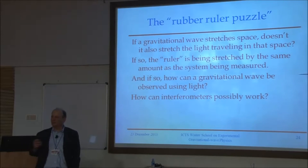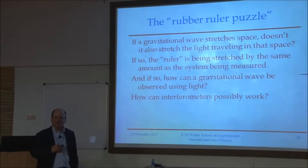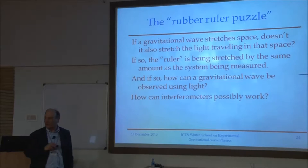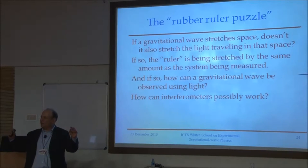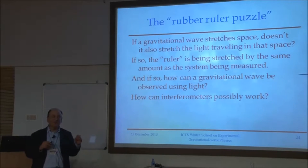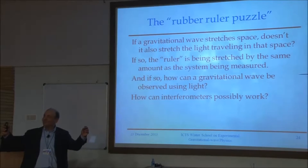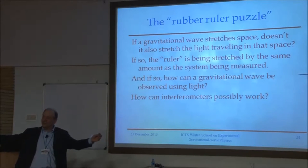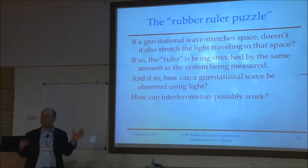The question is: is it not the case that the effect of the gravity wave is not just on the masses but also on the light? And if that is true — given that we're using light as a ruler to measure our lengths — do we not have a so-called rubber ruler? One that stretches when the arm it's in is stretched, is compressed when the arm it's in is compressed? And therefore, by construction, we have designed something that can't possibly respond to a gravitational wave. That's the puzzle.